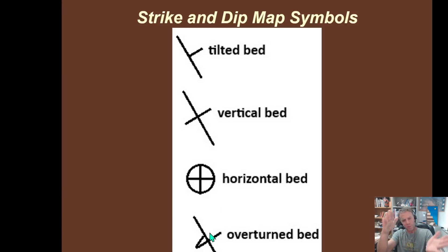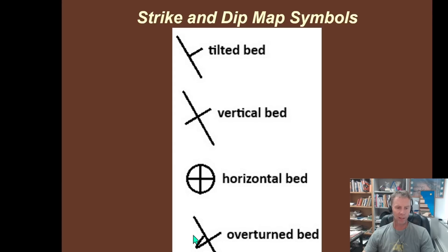And then if the rocks have actually been flipped over, so they have been tilted beyond 90 degrees and are now upside down, they are overturned. That's what we call an overturned bed, and that's shown by this symbol here. So the little dip line still shows the direction in which it dips, but it has been flipped over and rotated into that dip direction. So it's rotated past 90 degrees. So these are some other symbols you may see if you get a little deeper into this.